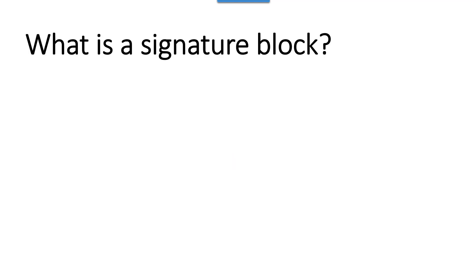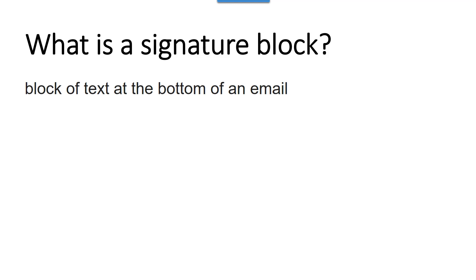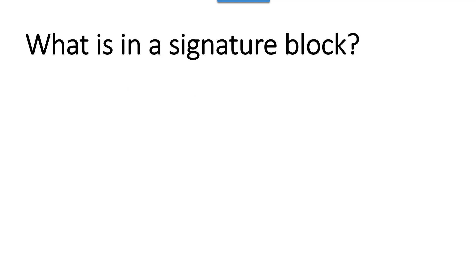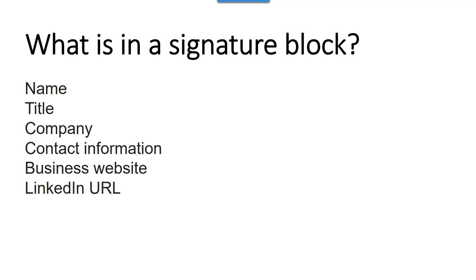Let's talk about your signature block. When you've written an email, you should have a signature that is ready to go. Sometimes you'll have multiple signatures, particularly if you play different roles and have different titles for different organizations. A signature block is a block of text at the bottom of an email. It includes your name, your title, your company, contact information, business website, a LinkedIn URL possibly, and maybe even a logo.